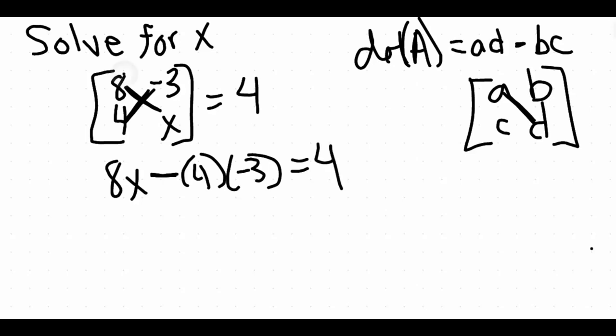So we do 8 times x minus 4 times negative 3 equals 4. The only thing we need to do now is simplify and solve this equation. I'm going to take care of the multiplication we have there. Negative 4 times negative 3 is positive 12, and that all equals 4. Now we're solving for x, so we want to move our 12 over to the other side.